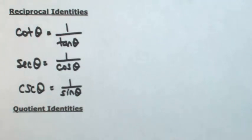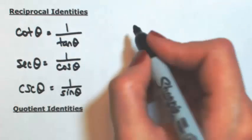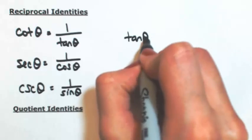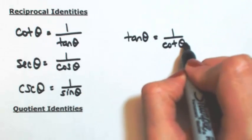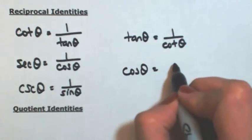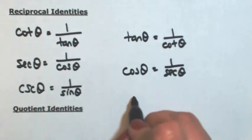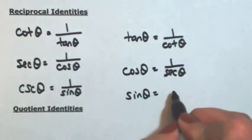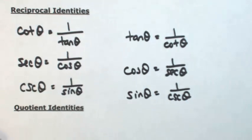Now this can work the other way as well. If cotangent is the reciprocal of tangent, then tangent is the reciprocal of cotangent. So I could also add three more identities: tangent of theta is 1 over the cotangent of theta, cosine of theta is the reciprocal of secant of theta, and sine of theta is the reciprocal of the cosecant of theta. Those are our reciprocal identities.